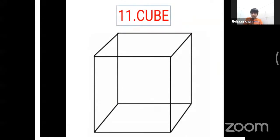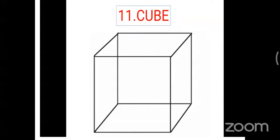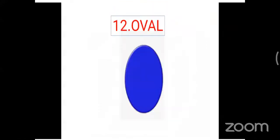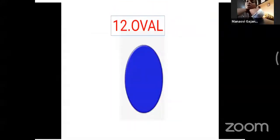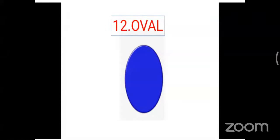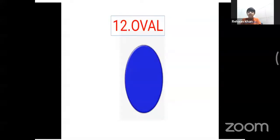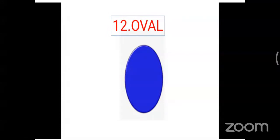Which shape is this? Cube! Very good. This is a cube. Dice is an example of a cube. Which shape? Oval! This is an oval shape. An egg is an example of an oval shape.